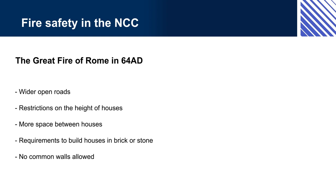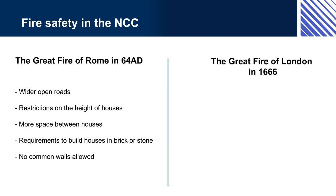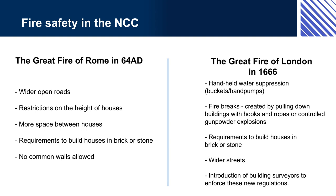Nero's plan included wider open roads, restrictions on the height of houses, more space between houses, requirements to build houses in brick or stone, and no common walls allowed. The Great Fire of London in 1666 began when embers from a bakery chimney ignited a thatched roof on an adjacent building. London burnt for four days with 80% of buildings destroyed. Subsequently, fire control measures were introduced, including handheld water suppression, buckets, hand pumps, fire breaks created by pulling down buildings with hooks and ropes or controlled gunpowder explosions, requirements to build houses in brick or stone, wider streets, and the introduction of building surveyors to enforce these new regulations. Many of these same measures are essential parts of current fire safety regulations around the world.